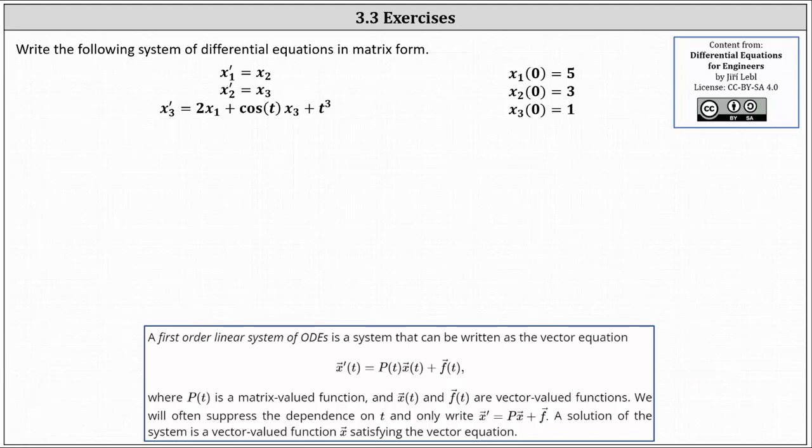We're going to write the following system of differential equations in matrix form. We have x1 prime equals x2, x2 prime equals x3, and x3 prime equals 2x1 plus cosine t x3 plus t cubed. We also have the initial conditions on the right.